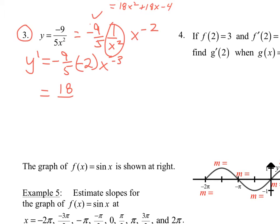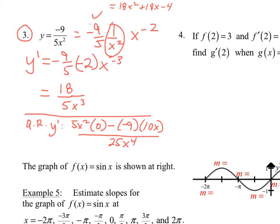Simplifying: this is going to be 18/5, and then x to the third goes in the denominator. If you do use the quotient rule — low d high — with the d high you get 0 because the derivative of negative 9 is 0. That simplifies down to 18 over 5x cubed, because one of the 5s cancels and one of the xs cancels. I prefer you do it the first way, but the quotient rule still does work.